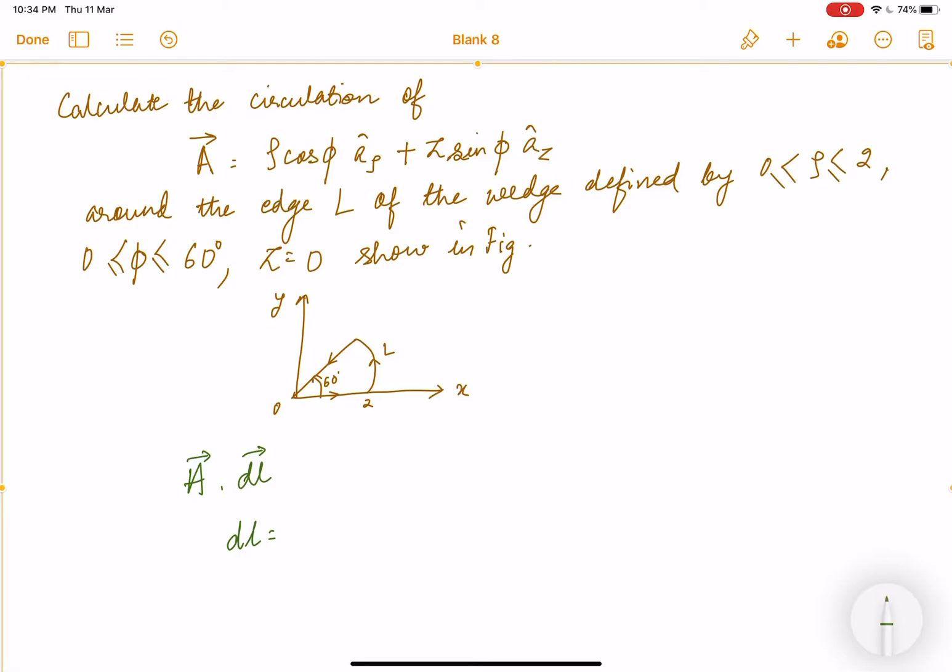in cylindrical coordinates, and we have ρ's limit, φ limit, and z is 0. So dl, as we know in cylindrical coordinates, we write dρ a_ρ plus ρ dφ a_φ